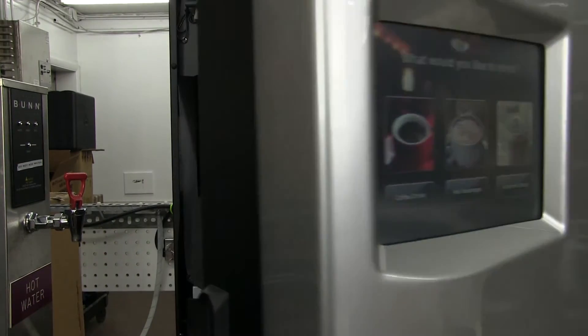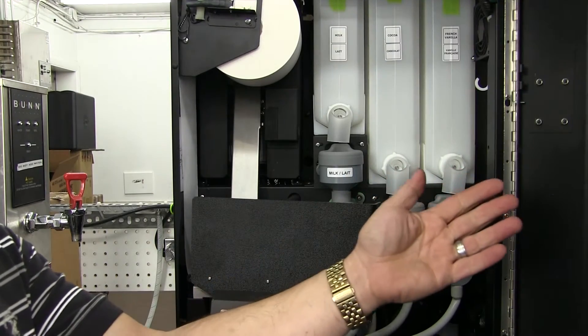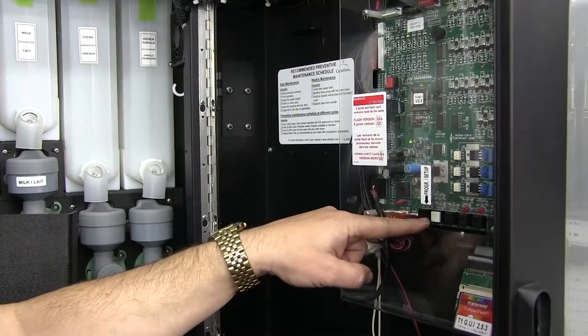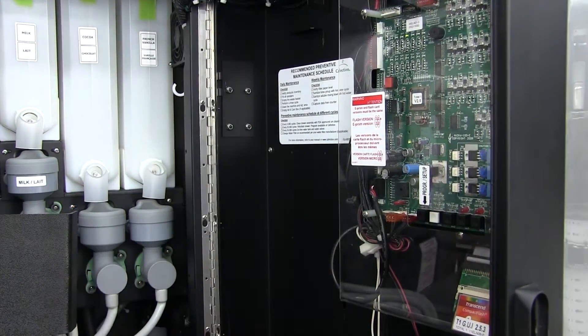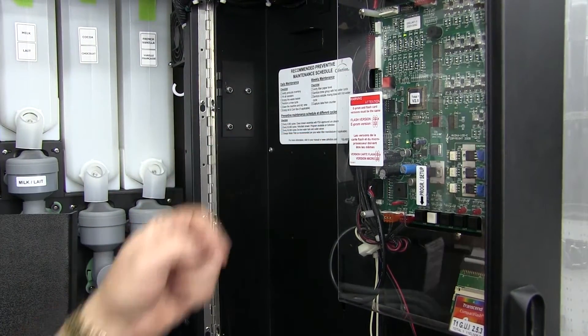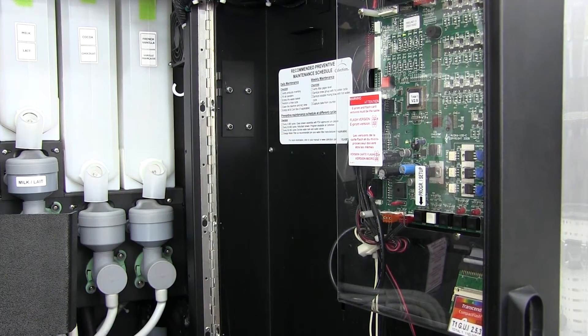Then we'll open the door and on the inside of the door is the control panel. We're going to push the white button and that'll bring up the menus on the outside of the machine that we'll use to change our paper roll.